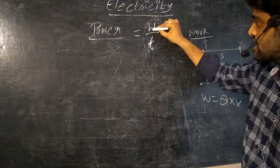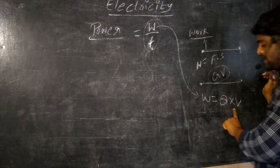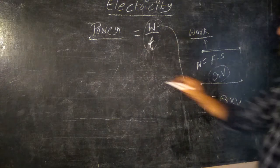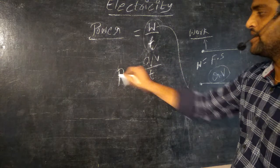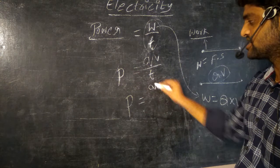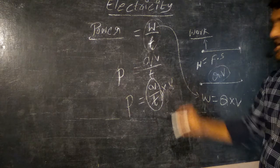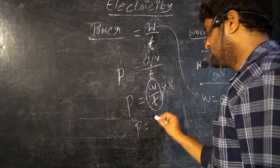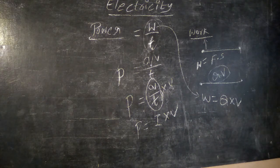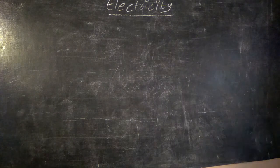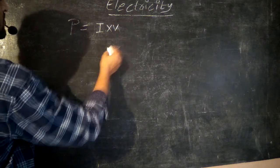So here work, we already got the expression for work. It is W is equal to Q into V. So I am just substituting QV in the place of W. Then I will get QV by T. Power equal to QV by T. So Q can be written as Q by T into V. Q by T is nothing but current, represented with I. Therefore power is equal to I into V.